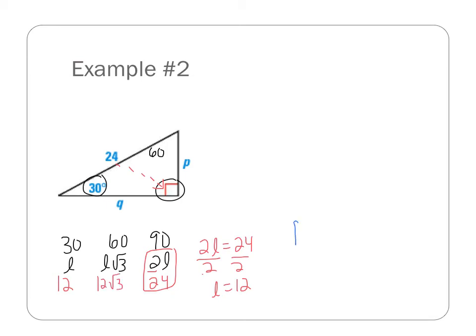Now in this case, I need to define what is P and what is Q. Well P is across from the 30, so P across from the 30 is going to be 12. Q is across from the 60, so looking at my ratio across from the 60 is 12 root 3. So that was another 30, 60, 90 example.